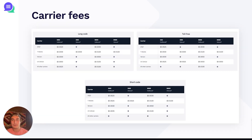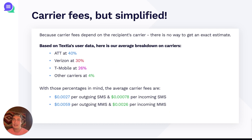Next up, we have carrier fees. If you're looking for super precise carrier fees, feel free to take a screenshot of this slide. This covers all the carrier fees for long codes, toll-free, and shortcodes with both SMS and MMS. But looking at this, it's very complicated to understand. Because carrier fees depend on the recipient's carrier, there's actually no way to get an exact estimate on your Twilio costs — AT&T, Verizon, and T-Mobile all charge slightly different carrier fees.